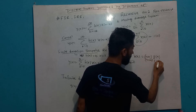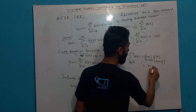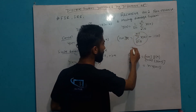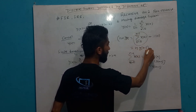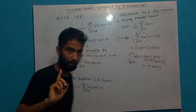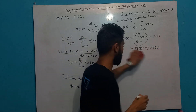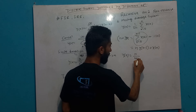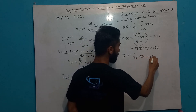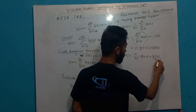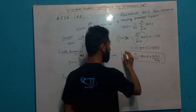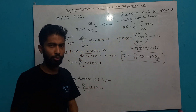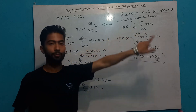...and y[n-1]. So y[n] = y[n-1] plus x[n] — this is the recursive moving average system. This is the same thing — using all values of input.